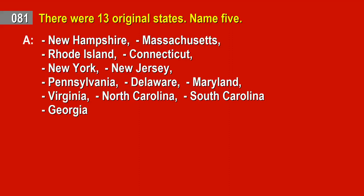Question 81. There were 13 original states. Name five. Answer: New Hampshire. Massachusetts. Rhode Island. Connecticut. New York. New Jersey. Pennsylvania. Delaware. Maryland. Virginia. North Carolina. South Carolina. Georgia.